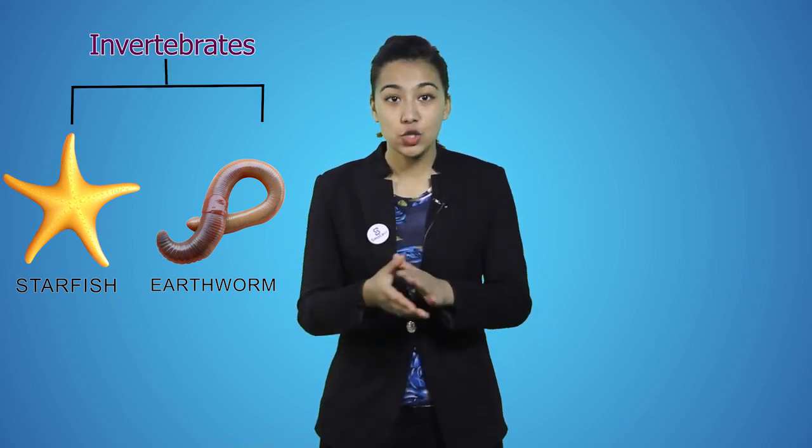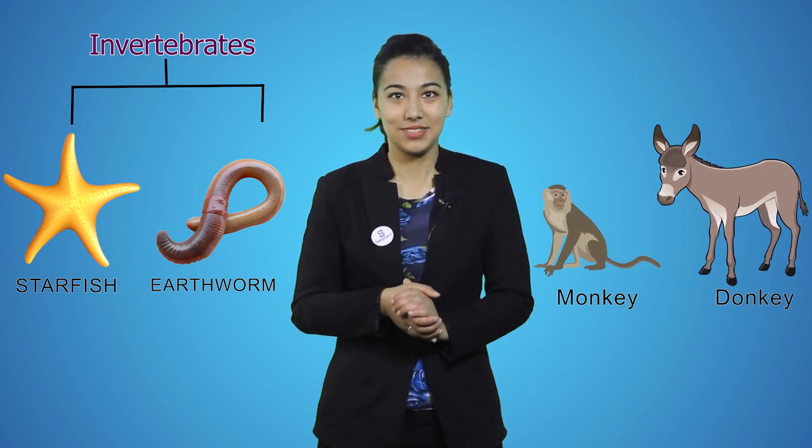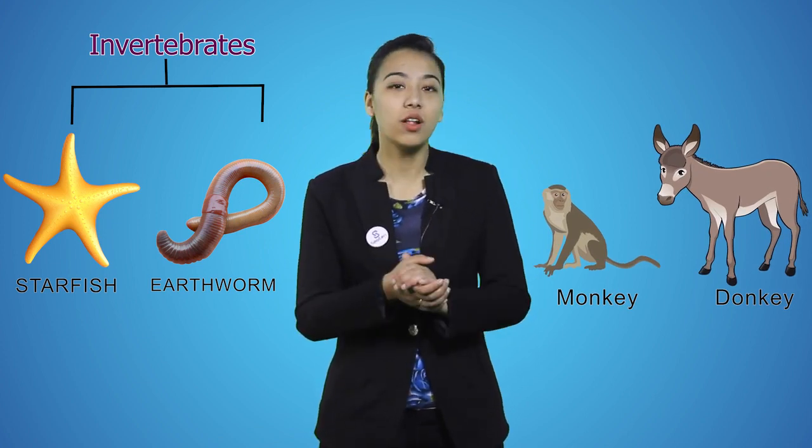Invertebrates and vertebrates are both found in different shapes and sizes. Do a starfish and an earthworm look the same? No, but they both fall under invertebrates. Do a monkey and a donkey look the same? No, but they both fall under vertebrates. Different animals have different characteristics — some may live on land, some in water, others fly, while others crawl.